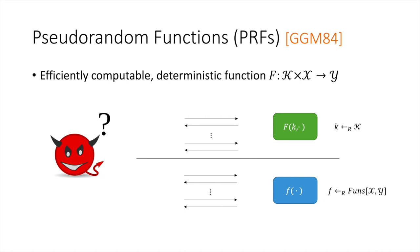We say that a PRF is secure if no efficient adversary can distinguish oracle access to the PRF, for a randomly chosen key, from oracle access to a completely randomly generated function.